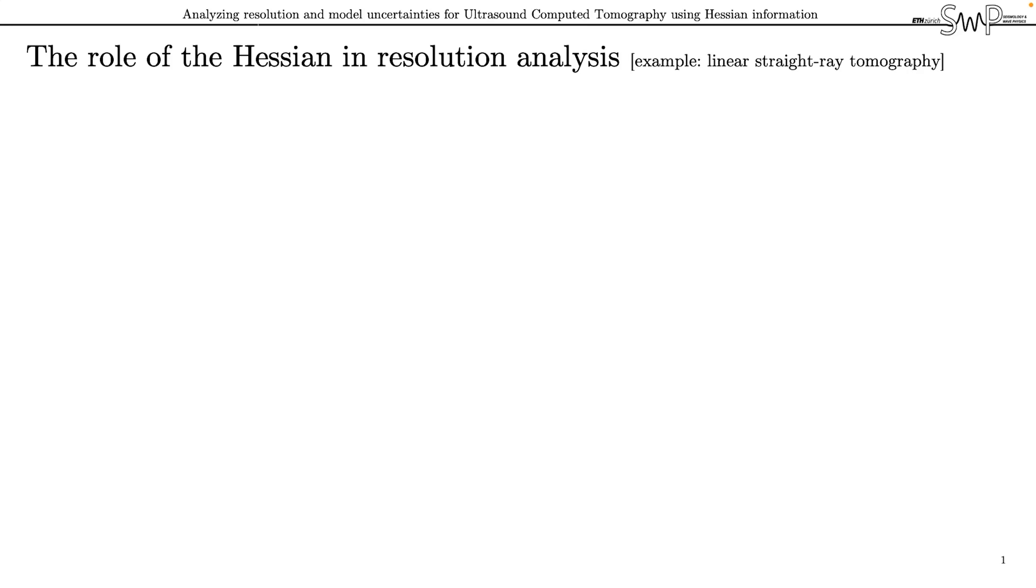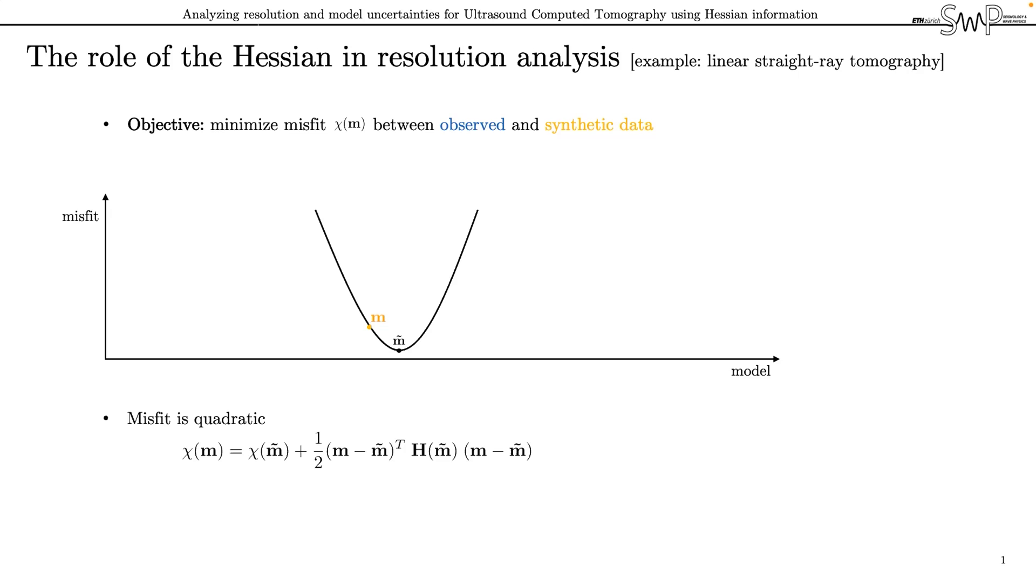To get a visual idea of what happens in an inversion, let us examine a linear case. Our objective when solving an inverse problem is to minimize the misfit between observed and synthetic data. For linear problems, the misfit is quadratic as seen here and we then try to iteratively slide down from the prior model M to the optimal model M tilde which reproduces the data within the uncertainties. Since the misfit is quadratic for linear problems, the second order expansion around the optimal model which involves the matrix of second order derivatives termed the Hessian is exact. The Hessian describes the geometry of the misfit in terms of its curvature and tells us by how much the misfit changes if the model is perturbed. Each row and column of the Hessian represents how sensitive an individual measurement is to changes in the model parameters.